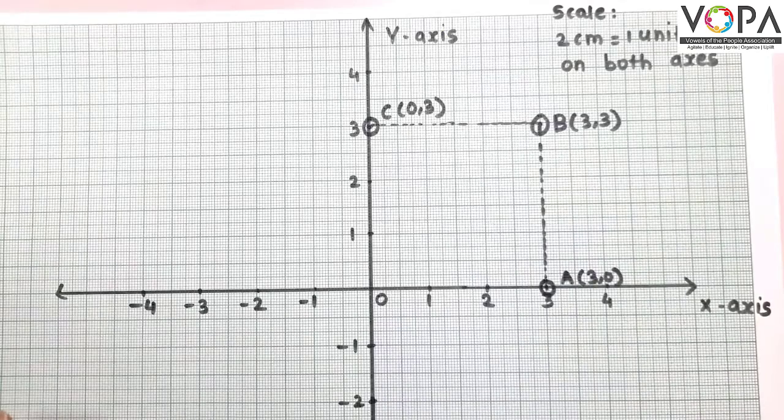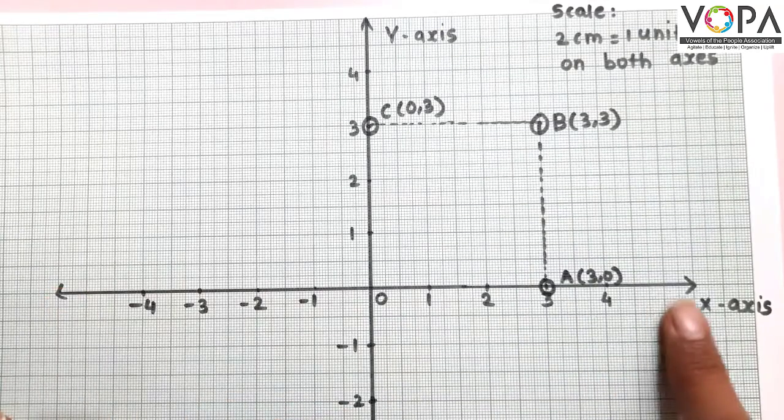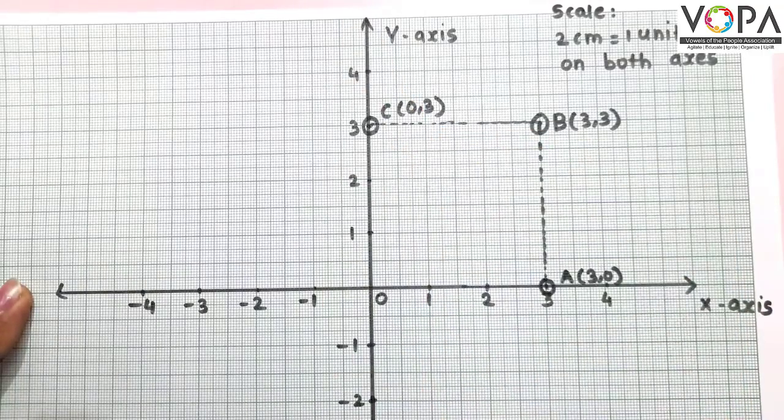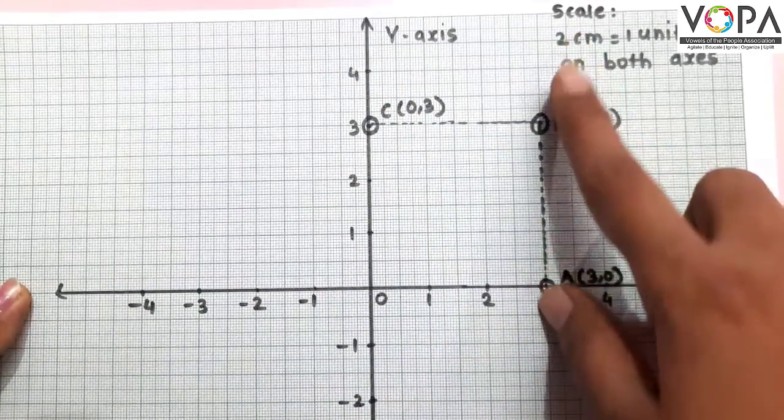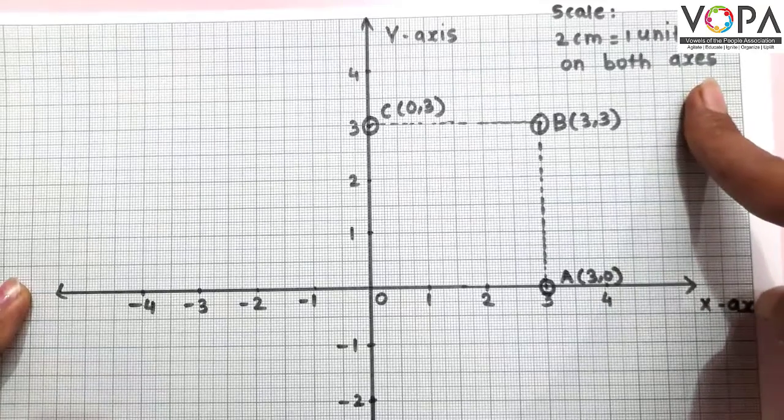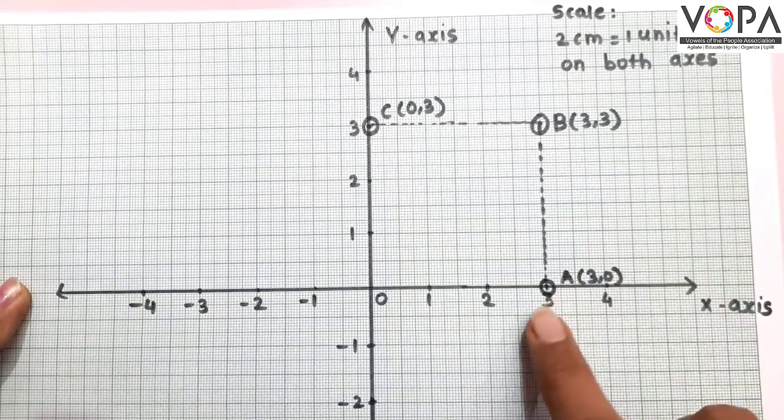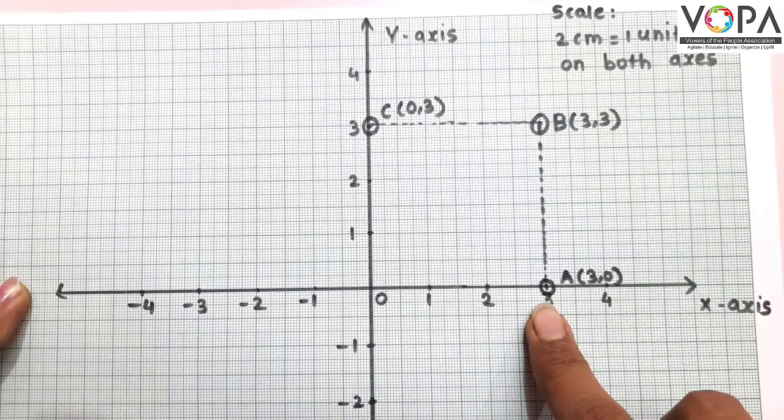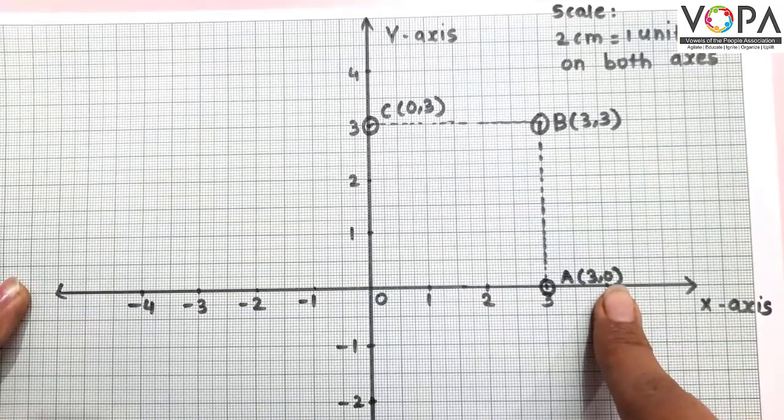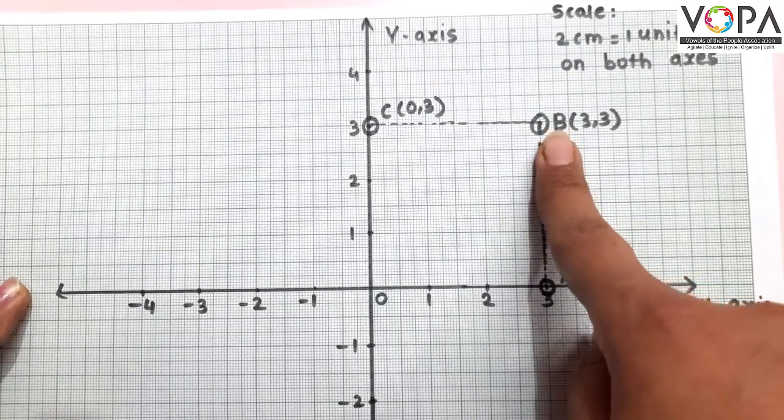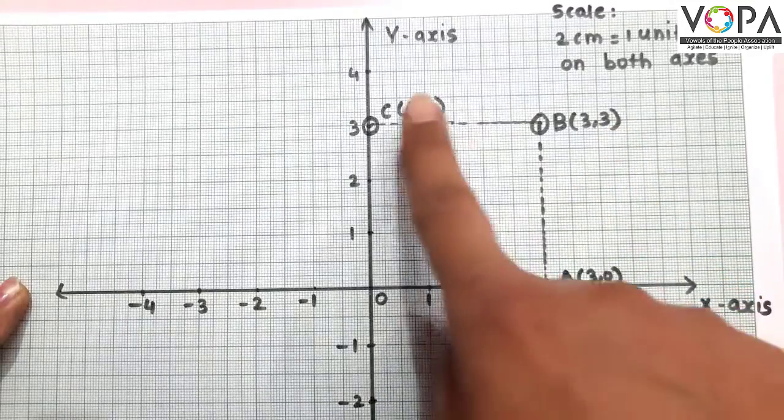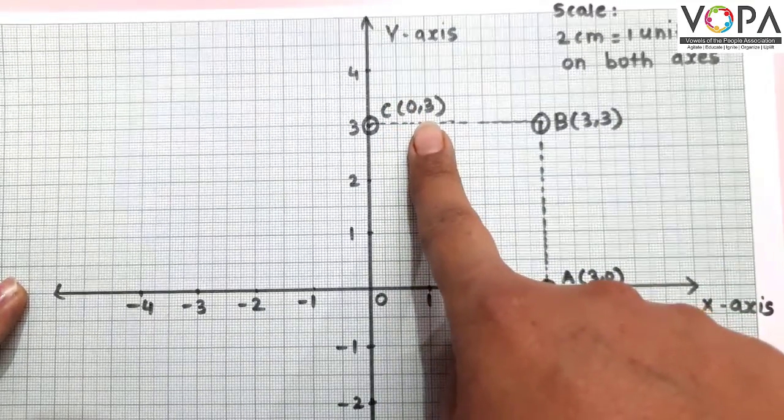On a graph paper, first we draw x-axis and then y-axis. Take a scale on both axes. Then we plot point A(3,0), point B(3,3), point C(0,3).